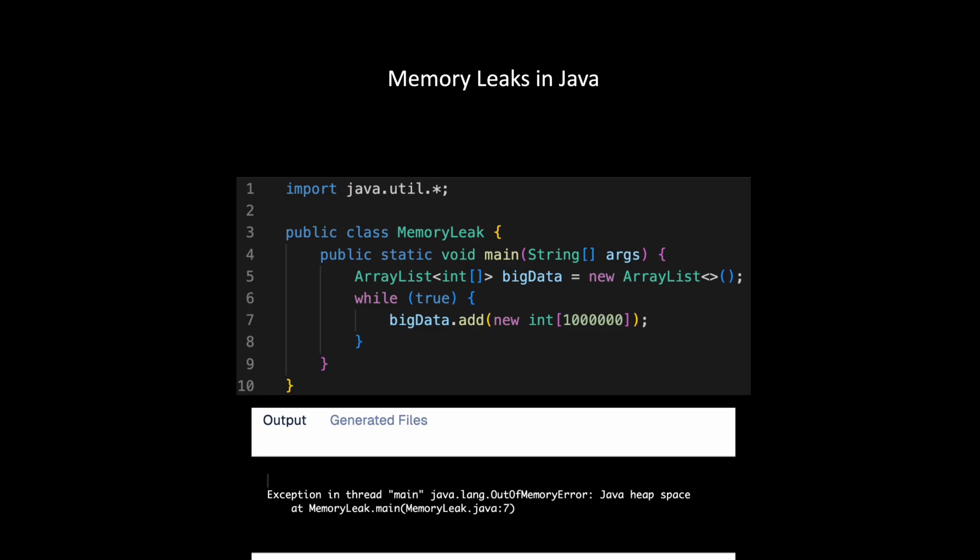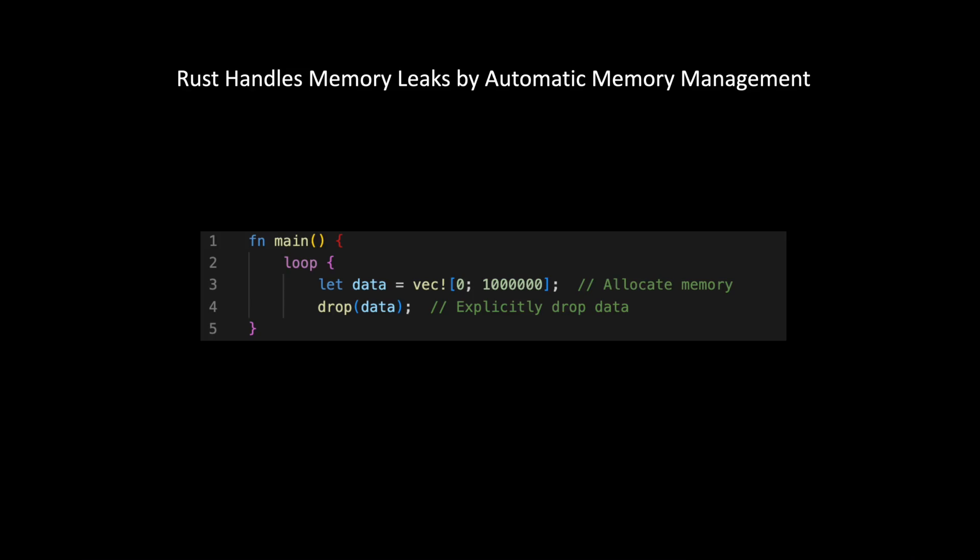If I port the same code to Rust, in each loop iteration I allocate one million integers and then call 'drop'. Drop says: I don't need this memory anymore — the owner of the data goes out of scope at the end of the loop, so it's released. I added 'drop' explicitly here for clarity, but even if you remove it, the compiler adds it behind the scenes automatically. You don't need to know about these issues — Rust handles it for you.